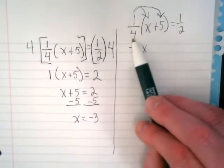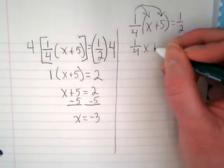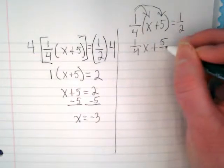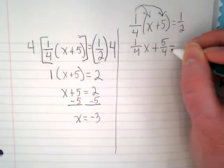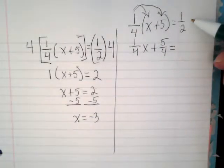5 times 1 over 4 is just going to give me that improper fraction of 5 fourths. And it's equal to 1 half.